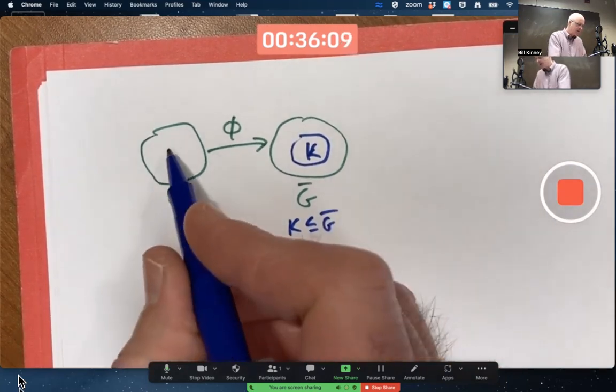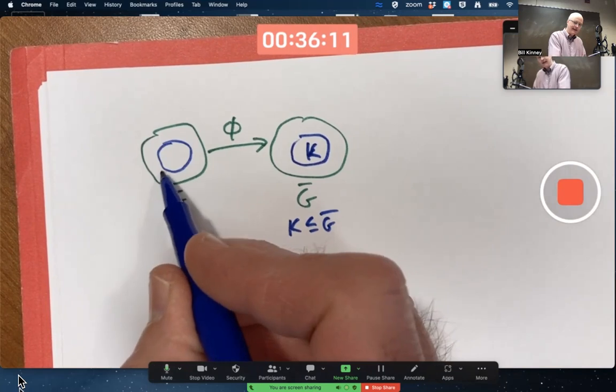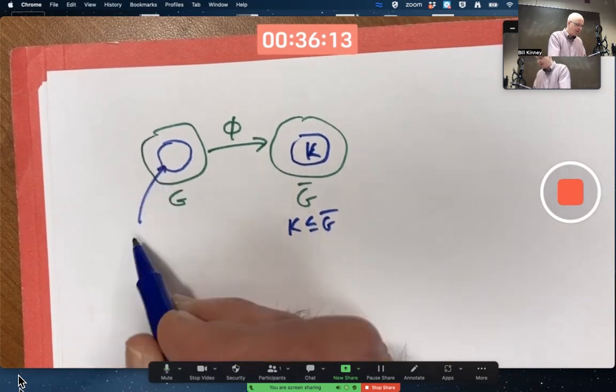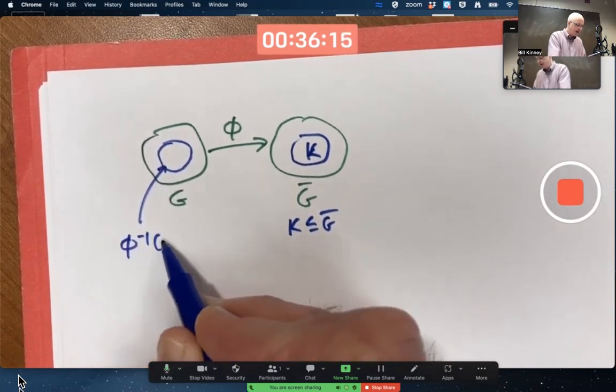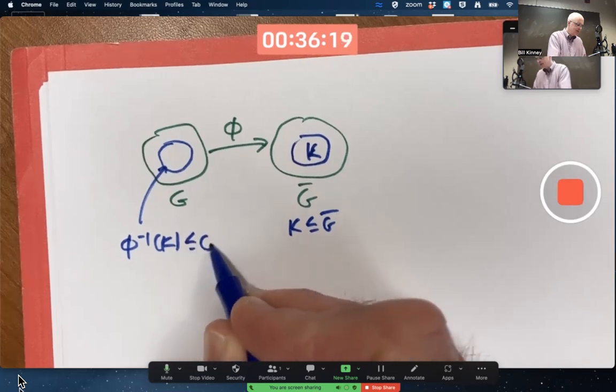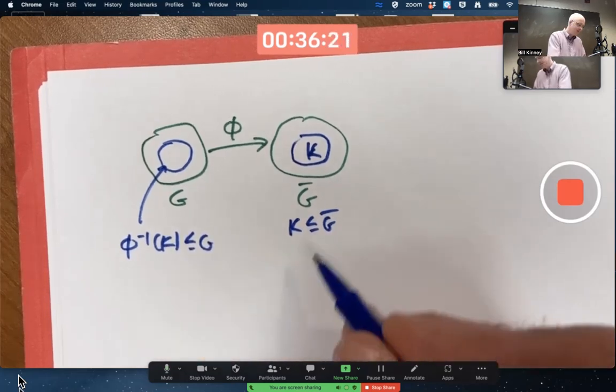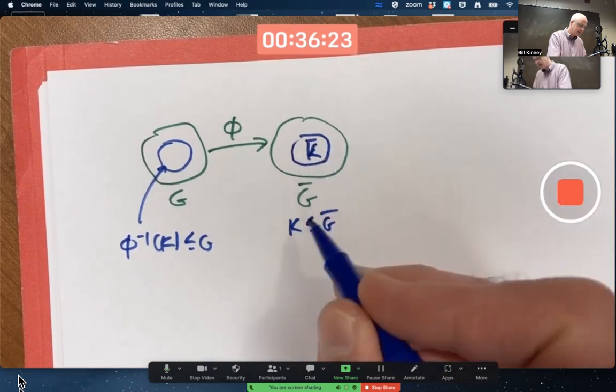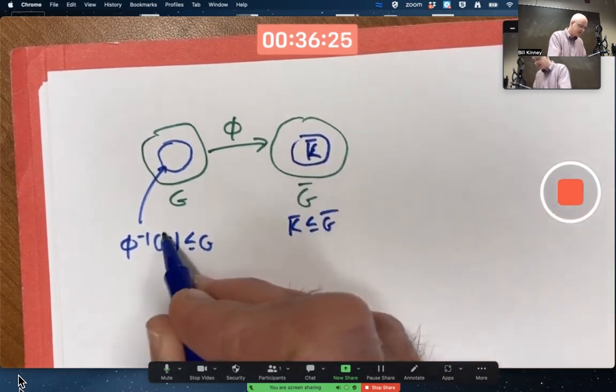The goal is to prove that a set over here, written φ inverse of K, is a subgroup of G. Actually, the book calls this K-bar over here. Maybe that's better to be more consistent in the notation.